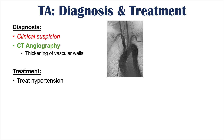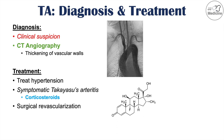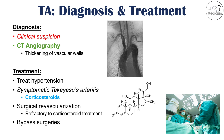Treatment involves multiple approaches. Hypertension is treated due to patients' increased risk. For symptomatic Takayasu's Arteritis, especially with complications, corticosteroids are used to reduce inflammatory changes in the arteries. Surgical revascularization is important to open stenotic vessels with thickened walls and restore blood flow, particularly in patients refractory to corticosteroid treatment. Some patients may also undergo bypass surgeries.